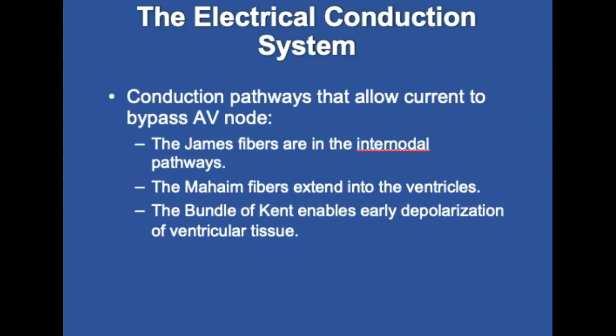Regarding accessory conduction pathways: the accessory pathway or bypass track is extra heart muscle tissue that connects the atria and ventricles by bypassing the AV node. James fibers extend through the atrial internodal pathway into the ventricles, bypassing the AV node. Maham fibers run through the AV node, the bundle of His, and the bundle branches, extending into the ventricles and providing a common pathway for re-entry dysrhythmias. The bundle of Kent is an accessory pathway typically located between the left atrium and left ventricle, enabling the depolarization wave to bypass the AV node and trigger early depolarization of a second section of ventricular tissue. The accessory pathway can trigger abnormally fast heart rates called tachydysrhythmias.